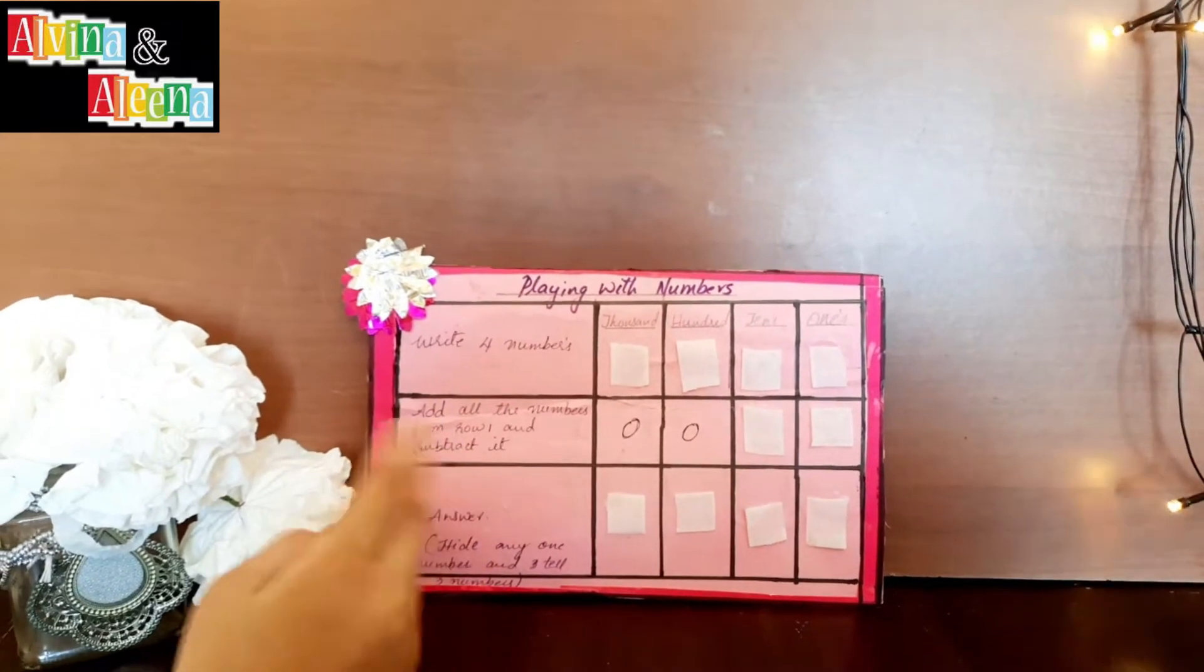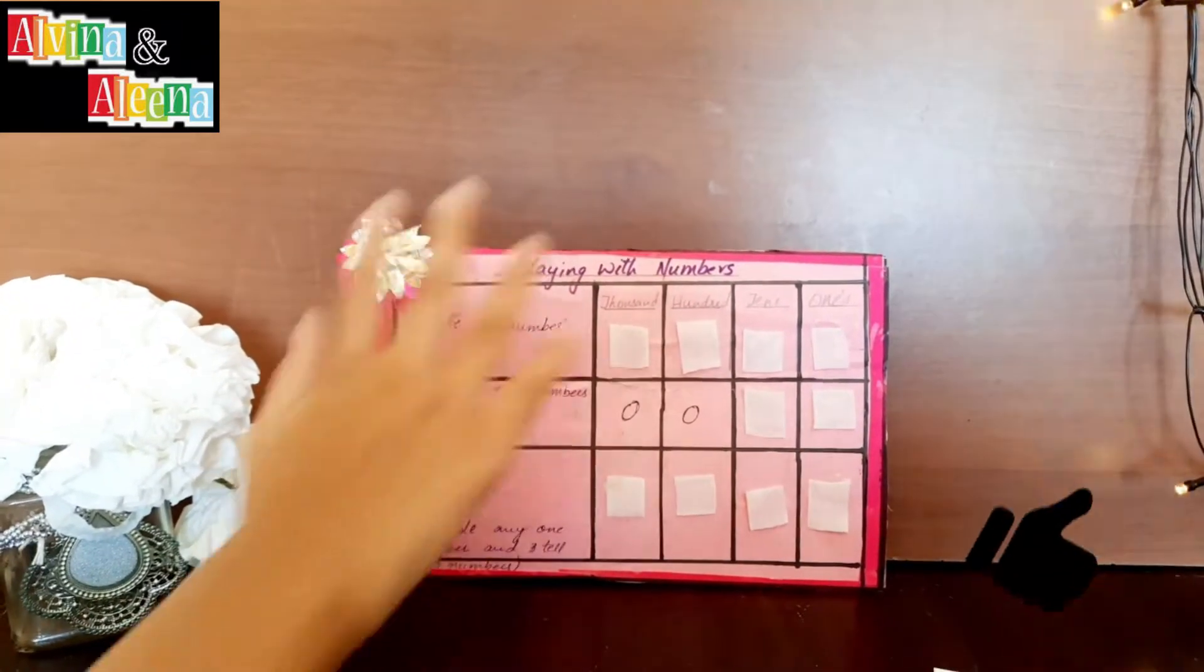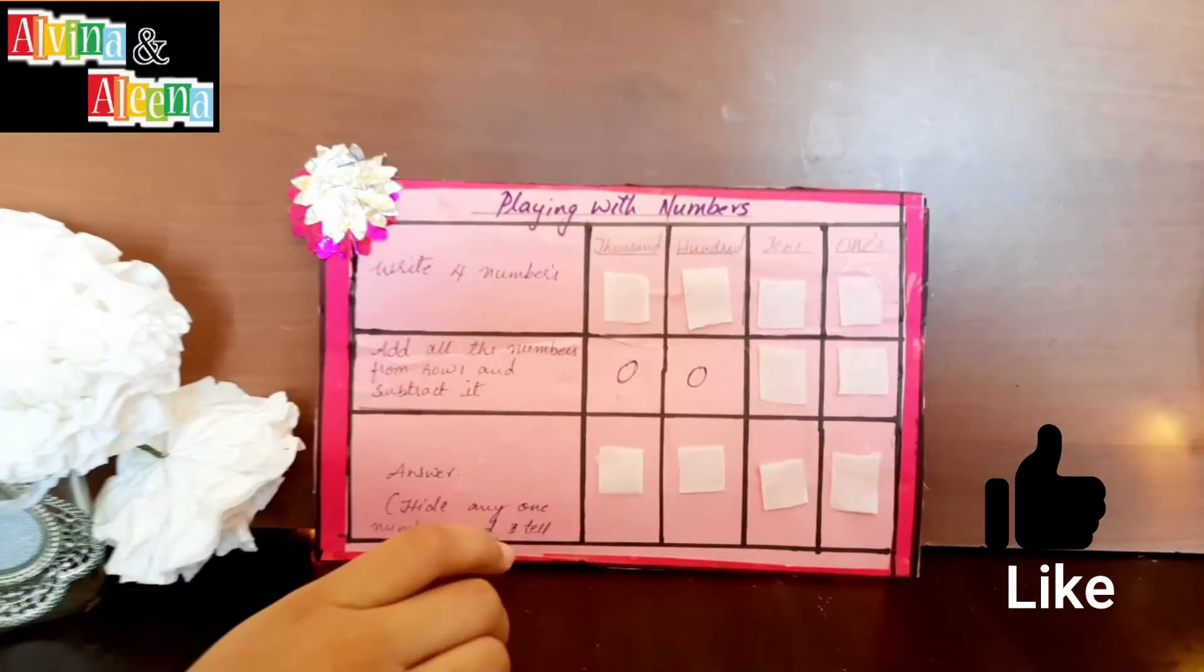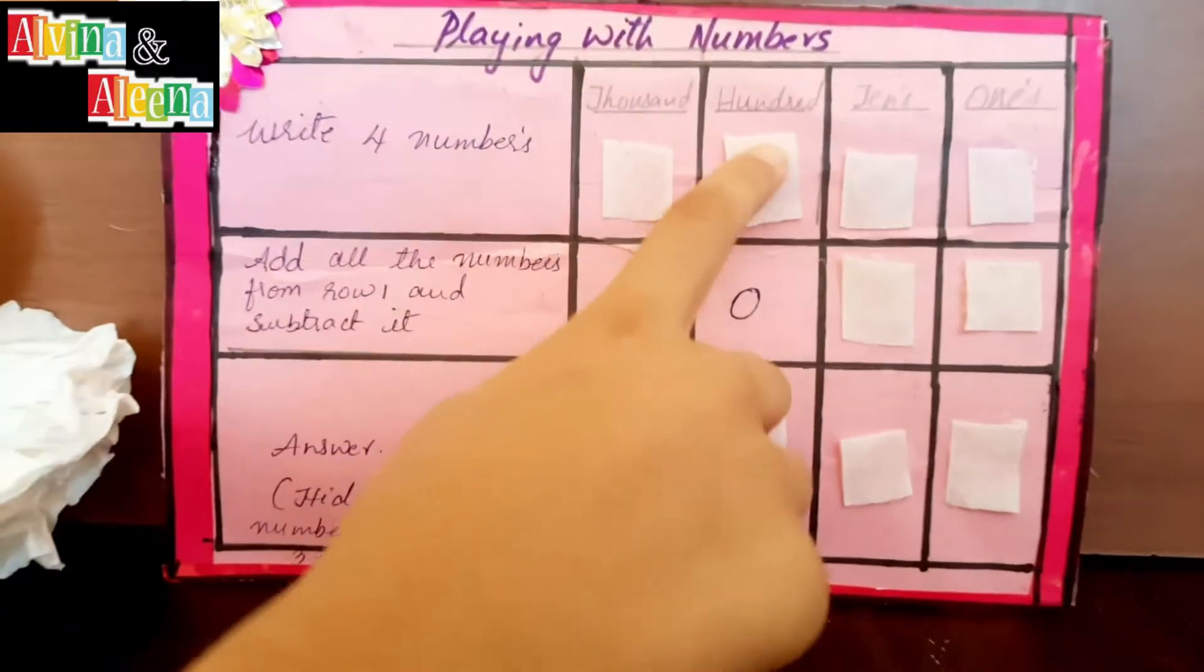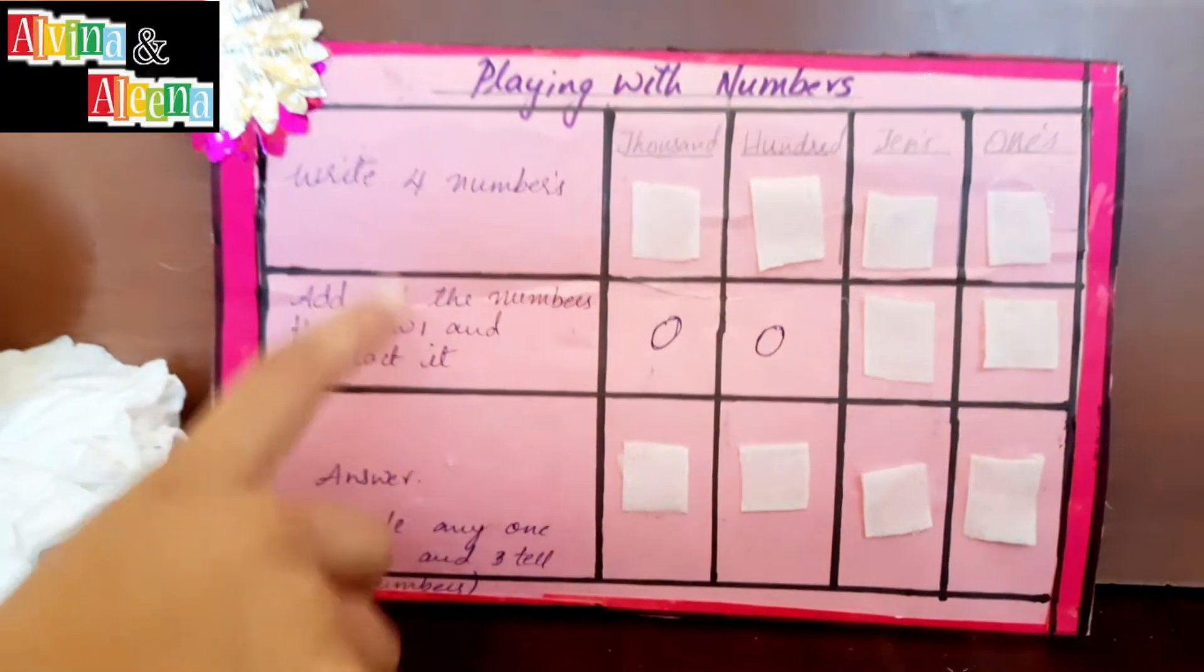This is a chart for playing with numbers. We have five columns and three rows. The first column is instructions: ones, tens, hundreds, and thousands.